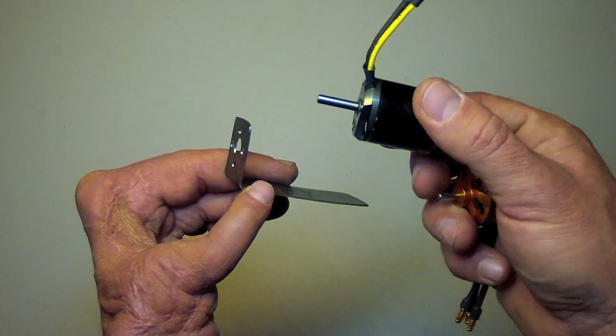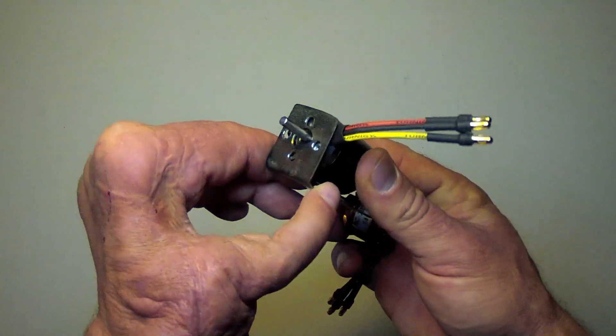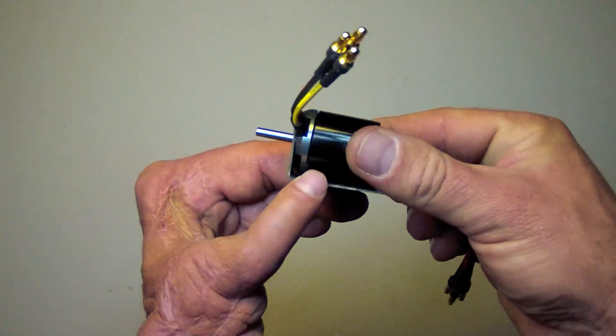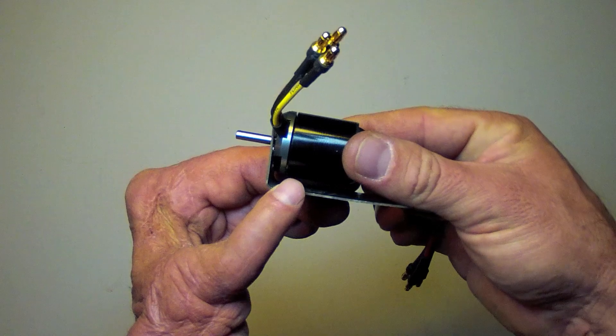For this type of motor, it will have to be mounted with the shaft through the motor mount like this, which has some mounting implications on the fuselage.